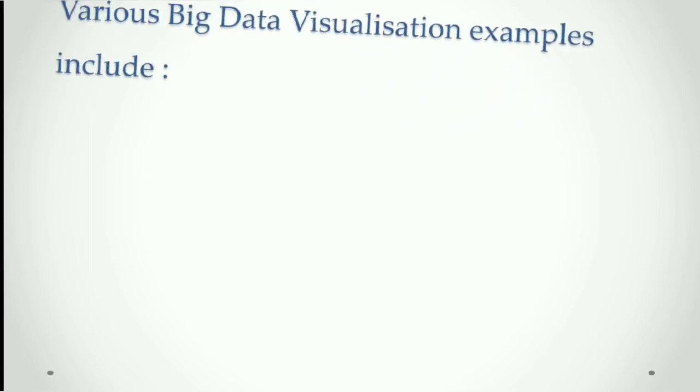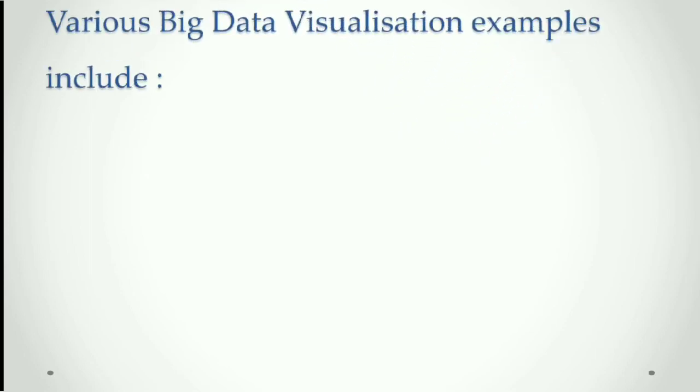Various data visualization examples include: linear (list of items, items sorted by a single feature), 2D planar geospatial (cartograms, dot distribution maps, proportional symbol maps, contour maps).